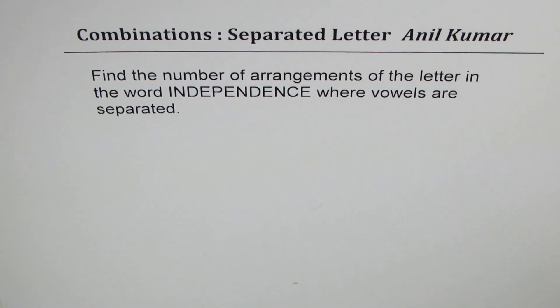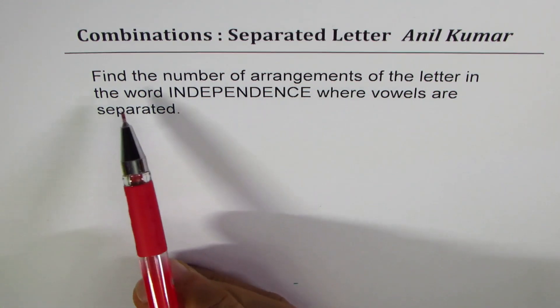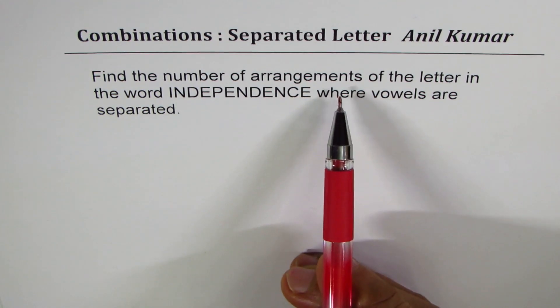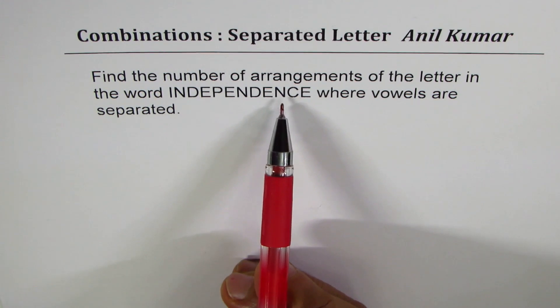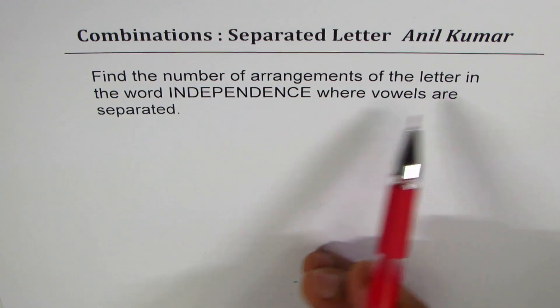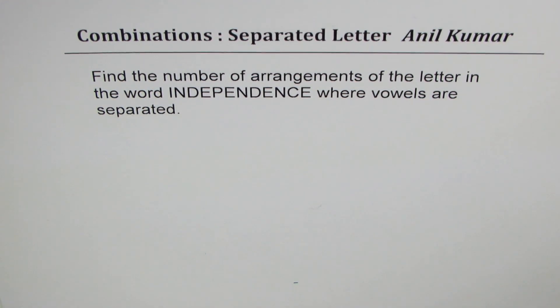I'm Anil Kumar. In this series, I've taken a few examples where we are talking about number of arrangements with separated letters. Here is a test question for you. The question is, find the number of arrangements of the letter in the word independence where vowels are separated. You can always pause the video, answer the question, and then look into my suggestion.